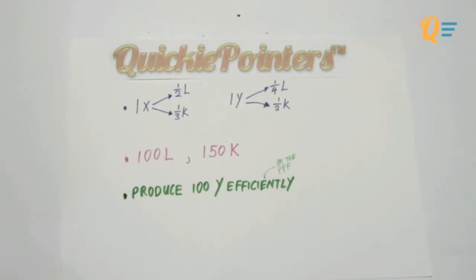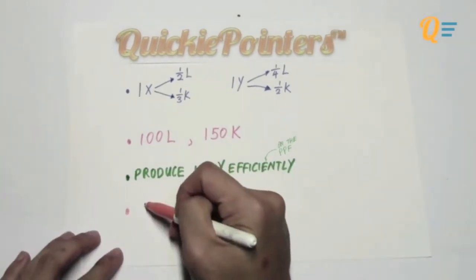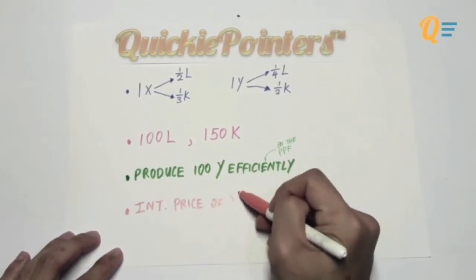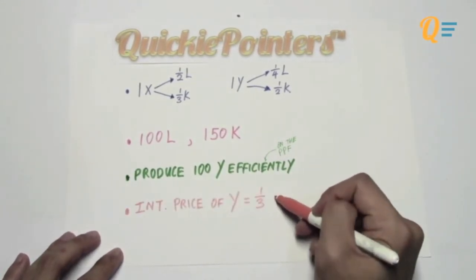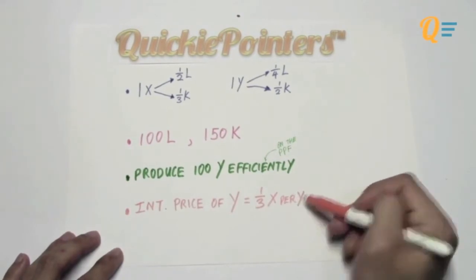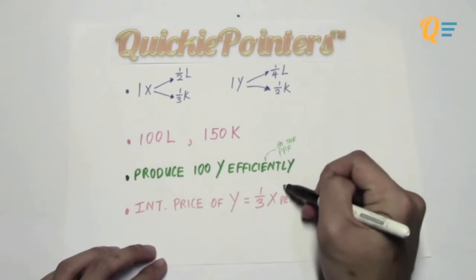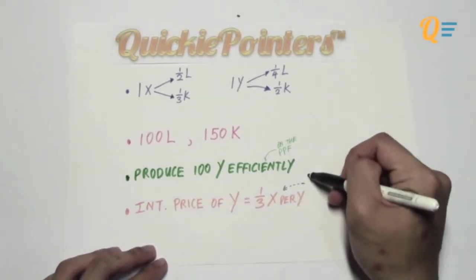We also know that there is an assumption that the international price of Y is going to be one-third X per unit of Y. So what does this Quickie Pointer imply? Well, this implies that we need to find the opportunity cost of producing Y. And this leads us to the next point.